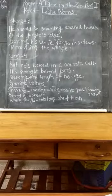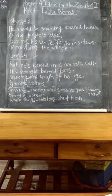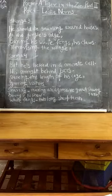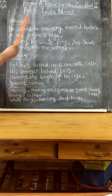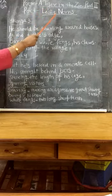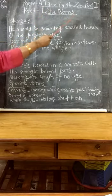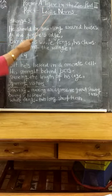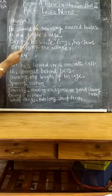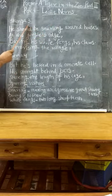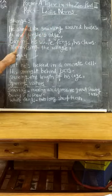Hello students, today I am going to start the second part of the poem, 'A Tiger in the Zoo,' composed by Leslie Norris. Let's start the third stanza of the poem.